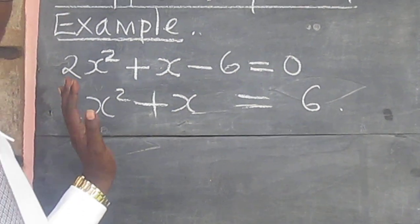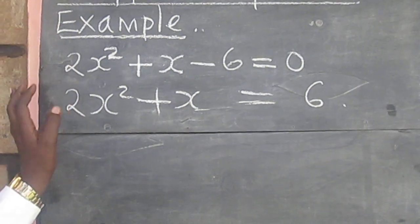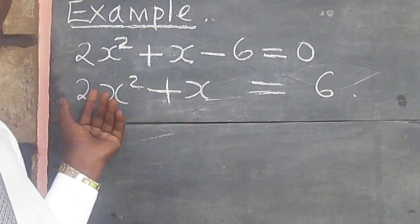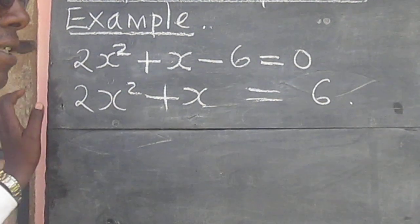Now because the coefficient of x² is not 1 this time, we will need to divide by that coefficient throughout. And when we do that, we get x² + x/2 = 6/2.